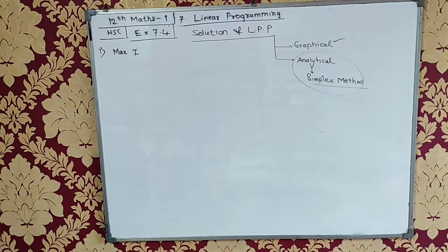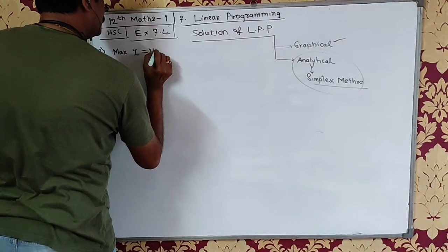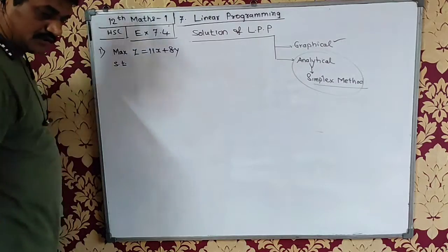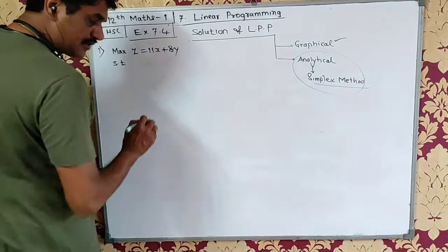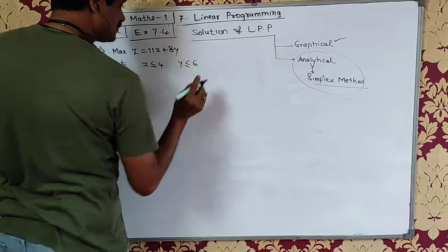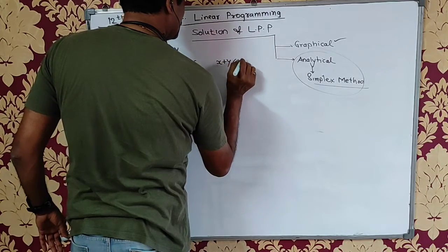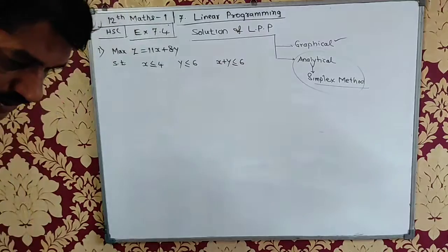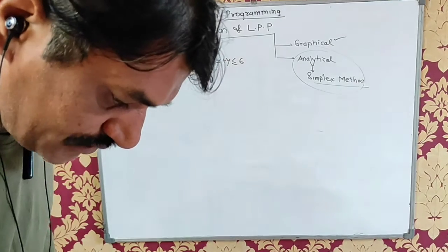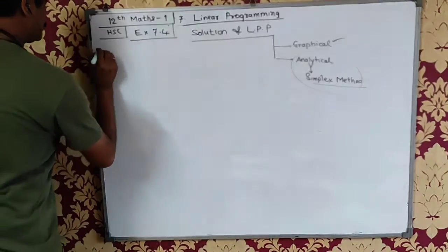Question number 1: Maximize z equals 11x plus 8y, subject to constraints x less than or equal to 4, y less than or equal to 6, and x plus y less than or equal to 6. This will be a difficult question, so rather than solving this very easy question, I will prefer to go for question number 2.